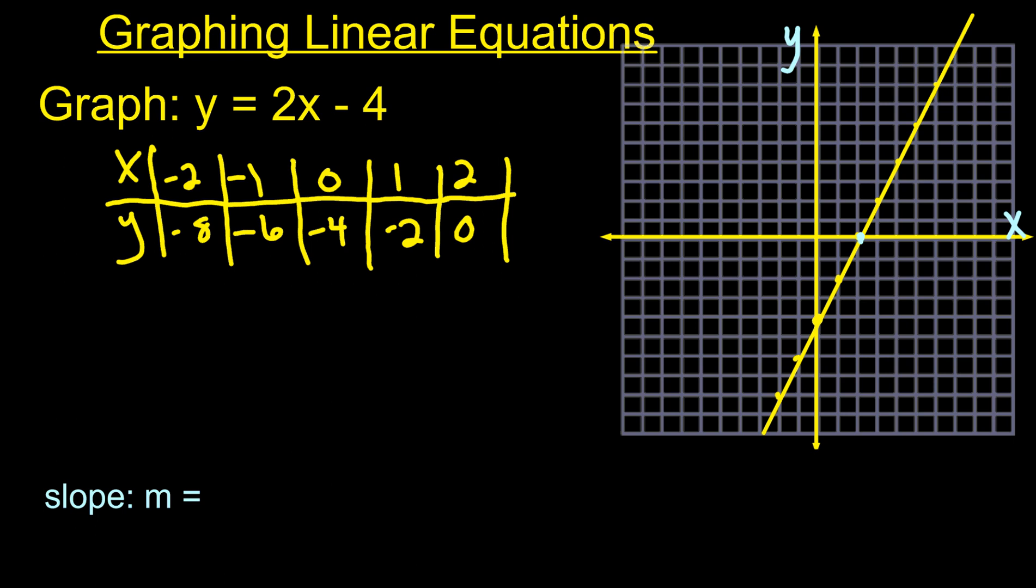It's just a refresher. And then where the line crosses the x-axis, this is called the x-intercept. Another word for that in algebra is called the zero. Some equations have more than one zero, but a line like this only has one zero. Where it crosses the y-axis is called the y-intercept. So we've got the x-intercept, the y-intercept.